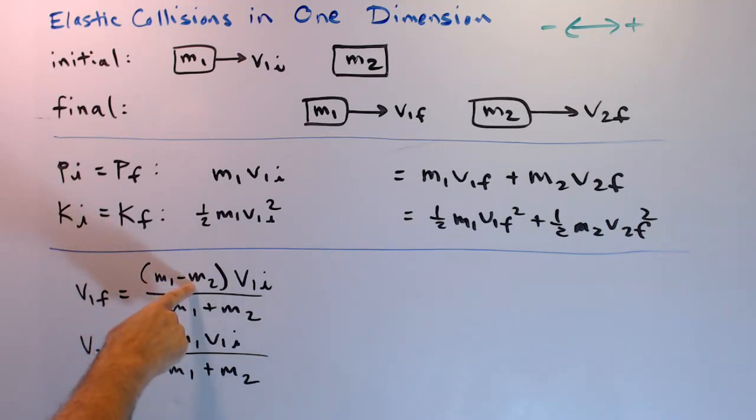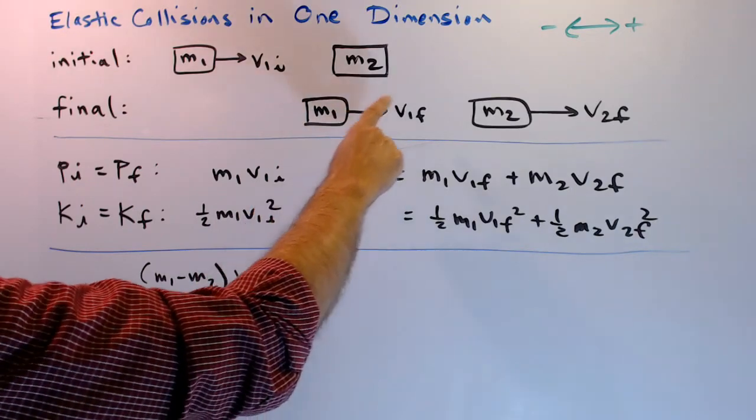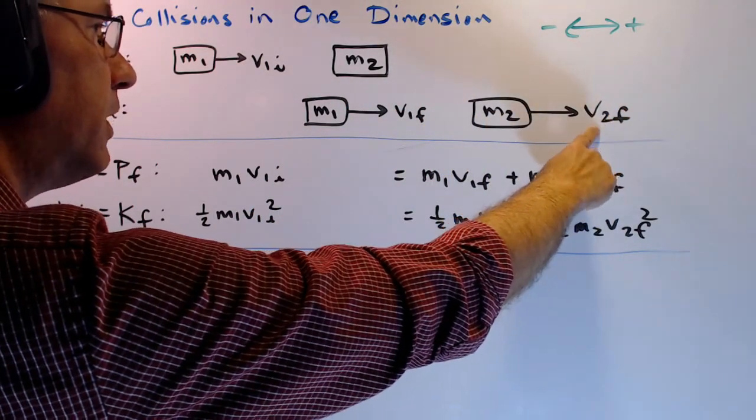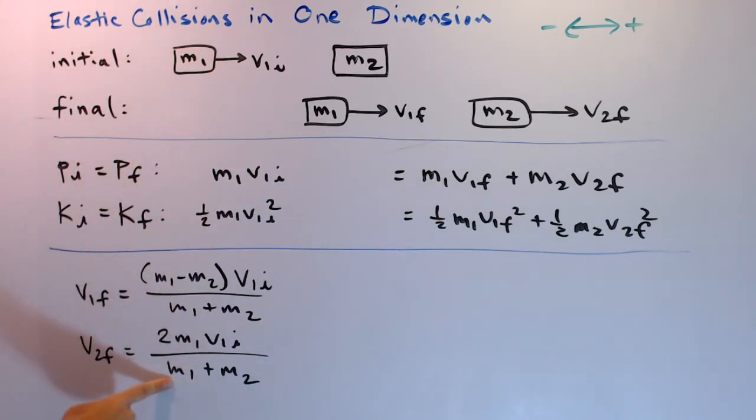If m1 is greater than m2, this quantity is positive and v1 final is positive. If m1 is less than m2, this will be negative, v1 final will be negative, and the velocity will be to the left. If m1 is equal to m2, this term is zero. Mass one stops dead, and then mass two sails off with exactly the same velocity that mass one had originally. And you can see that right here. If m1 equals m2, you've got a 2m on the top and a 2m on the bottom, v2 final equals v1 initial.